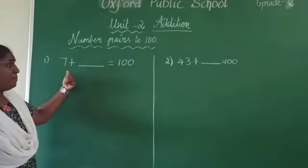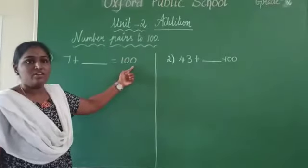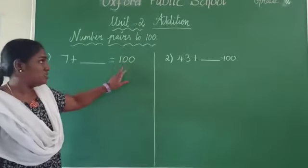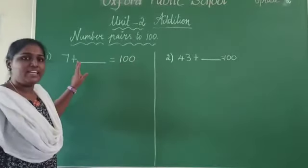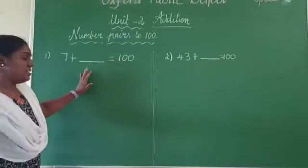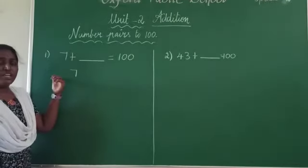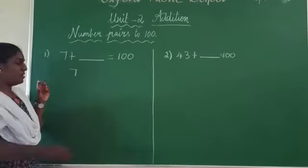Now see here you have 7 plus dash is equal to 100. So here our ultimate goal is to get 100. By adding any 2 numbers we should get 100. So what is the first step? You have to find a friend of 7 to make it whole number.